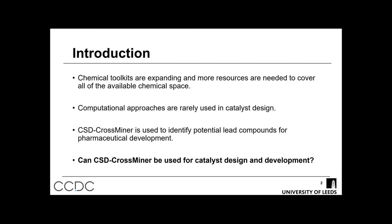As chemical toolkits increase in size, both from increasing numbers of possible chemical transformations and the possible ways to achieve them, new approaches need to be developed to allow for faster or reduced experimentation in order to accelerate discovery and reduce resource usage. However, computational approaches are rarely used in catalyst design due to the lack of tools and the complexity of reaction processes. The CSD's CrossMiner tool is based on structure-based design and is commonly used in the pharmaceutical industry to identify potential lead compounds. The question is: can these same approaches be used in catalyst design and development as well?